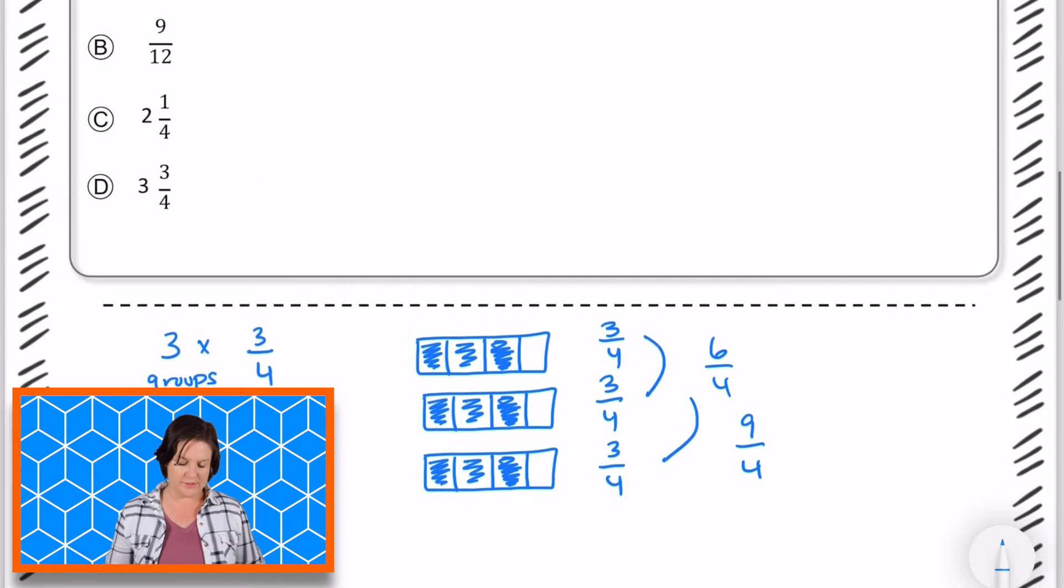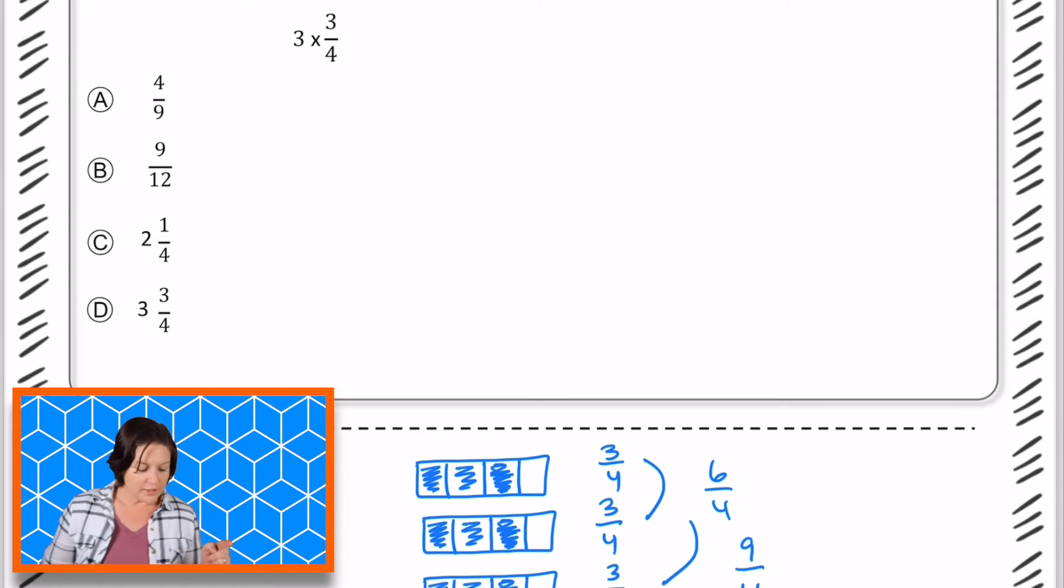Nope. 4/9 is, but that would be the reciprocal of it. It's not the same. I'm sorry, 4/9 is not the same as 9/4. So we can eliminate A.